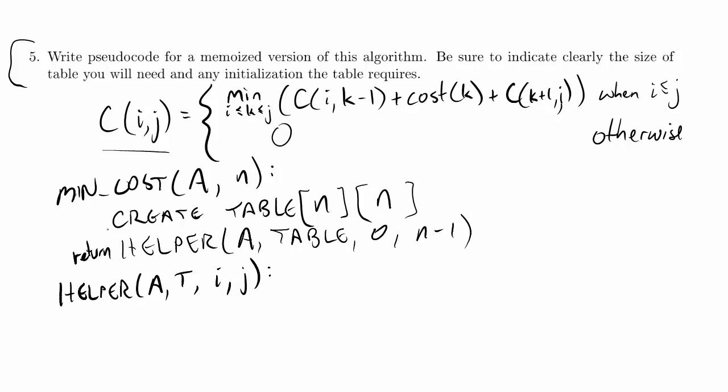So I'm going to return whatever value the helper gives back, and that'll be the minimum overall cost. Honestly, we know from working previous memoization problems, it's the table itself that's probably going to be the most interesting thing, not the minimum cost. The table is what's going to let us actually pull the solution back out again.